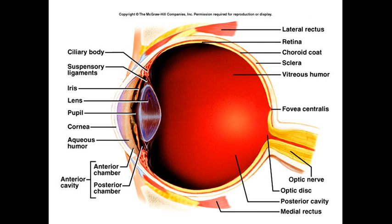The space between the cornea and lens is filled with transparent fluid called aqueous humor. The space between the lens and the retina is filled with another transparent fluid called vitreous humor. On the retina there is a small spot called the macula, which supports clear vision. At the center of the macula is the fovea, also responsible for detailed, clear vision. We also find the blind spot, which contains the optic nerve and is not completely sensitive to light.